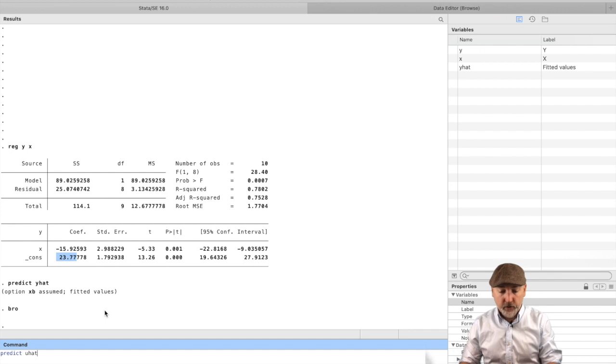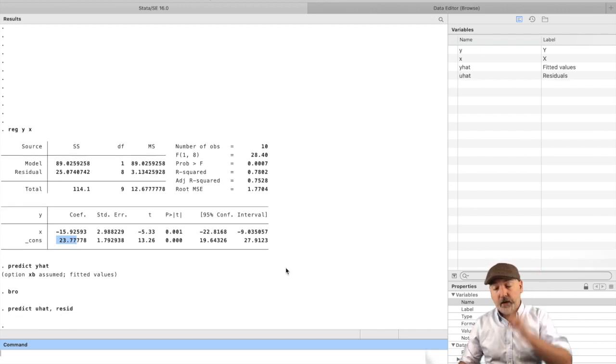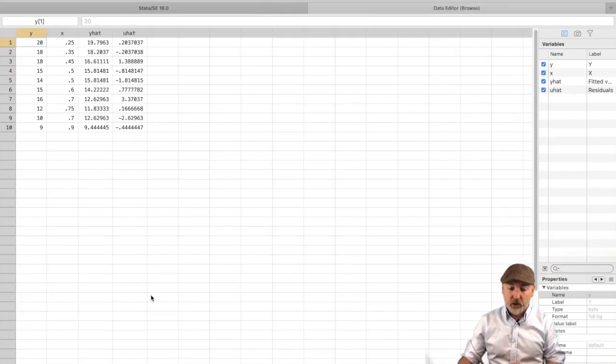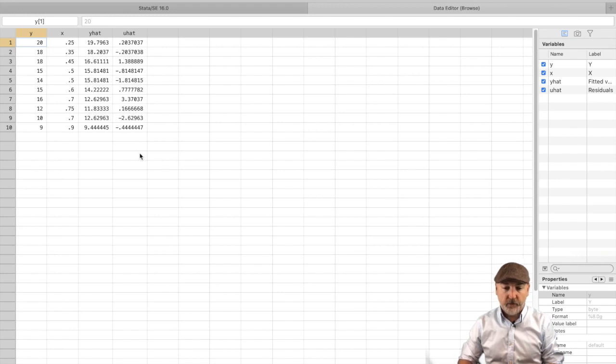We go predict, we're going to call it u-hat, and what you put right after predict is your choice. But we have to go comma resid to tell Stata that we want to create the u-hat rather than the default which was the y-hat. We look up and see a new variable created. The goal here is to be able to replicate by hand, deconstructed piece by piece, all the things that Stata is doing for us.